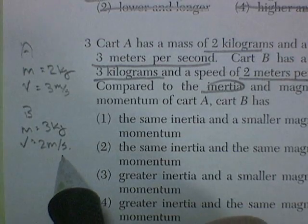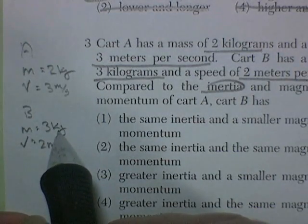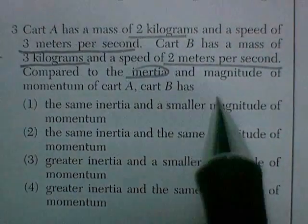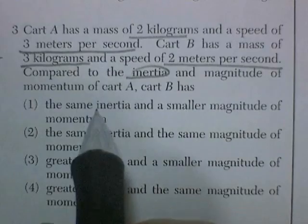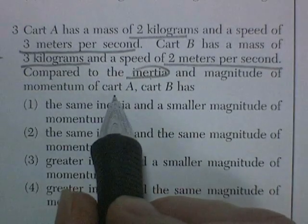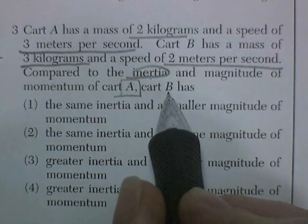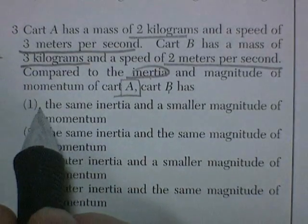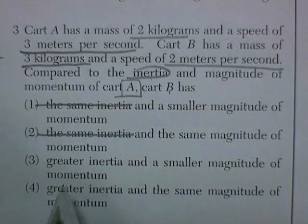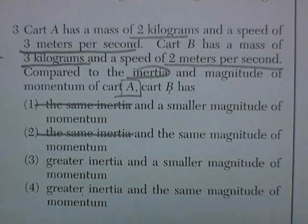Well, inertia is a function of mass. So cart B has more inertia than cart A. Let's read the question again. Compared to the inertia and magnitude of A, so compared to the inertia of A, cart B is more. The same inertia can't be right. Greater inertia and greater inertia. Both 3 and 4 are possible choices.